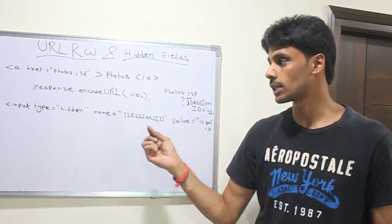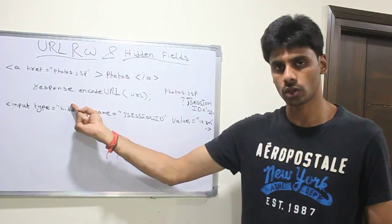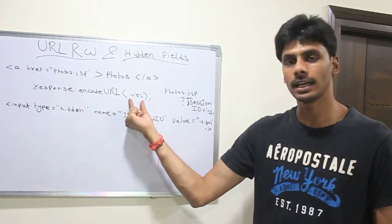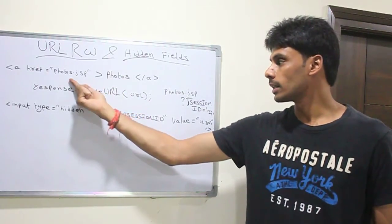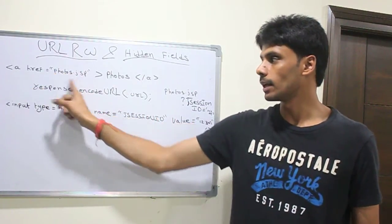You can ask the web container to append the J session ID by invoking the encode URL method on the response object and pass it the URL that you want the J session ID to be appended. That will return you a string that should be used in here.